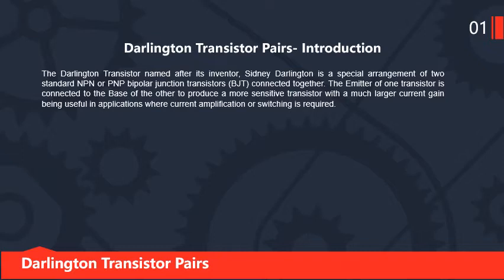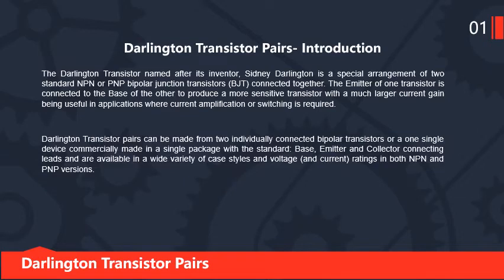The Darlington transistor pair can be connected using two transistors, NPN and PNP, arranged so that the current gain is fed to the other transistor's base. The current gain is greater than unity. The pair can be individually connected bipolar transistors or made as a single device in a commercial package with standard base, emitter, and collector leads, available in a wide variety of case styles, voltage and current ratings, in both NPN and PNP versions.